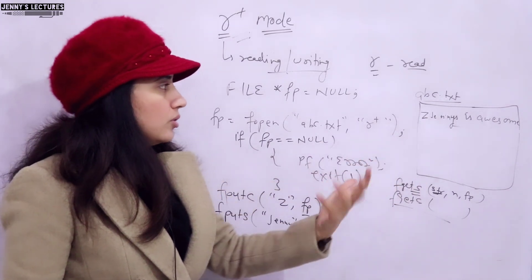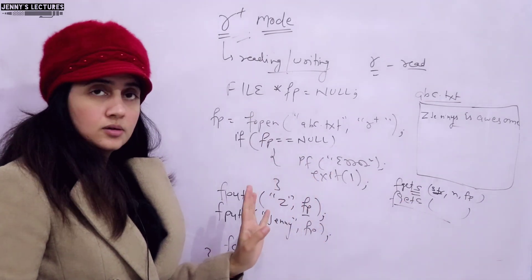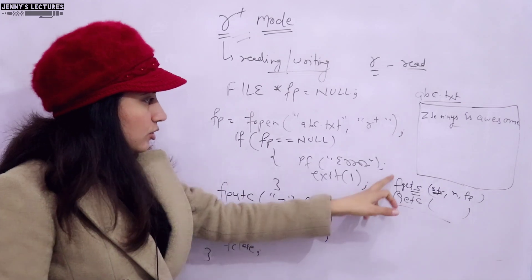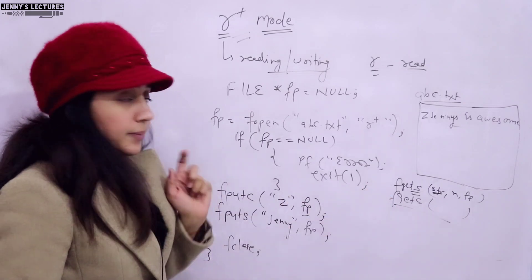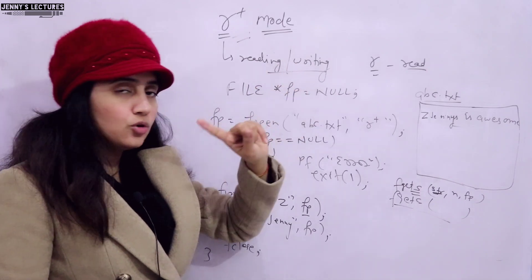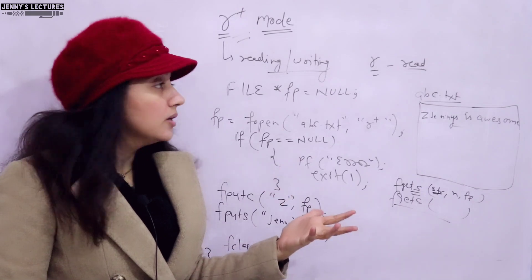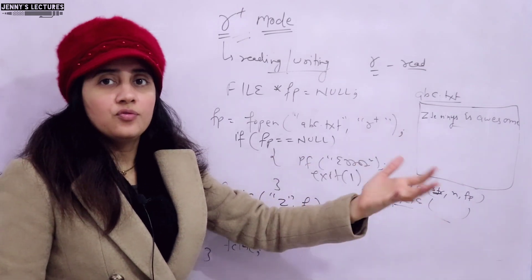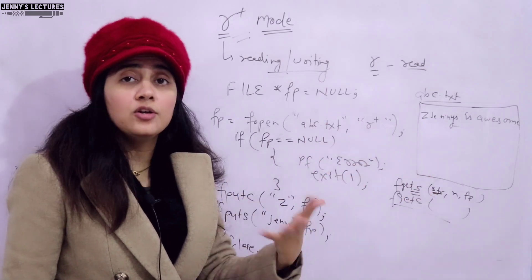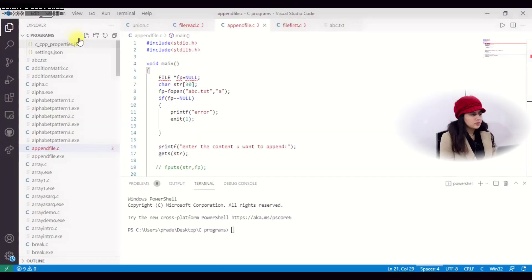The main points about r plus mode: it opens the file for both reading and writing. If the file doesn't exist, it will not create a new file — it returns a null pointer. It is primarily used to modify the existing content of a file. Move the file pointer to wherever you want to modify content, and that's it. Let me now show you the practical demonstration.